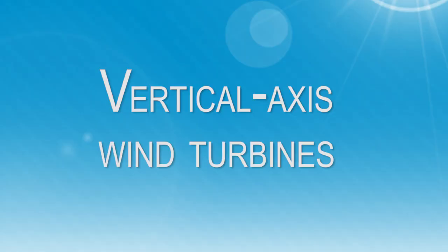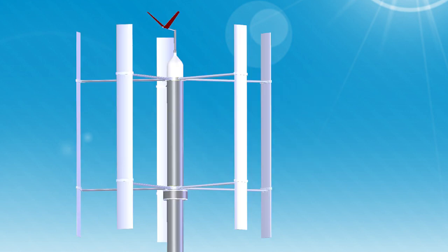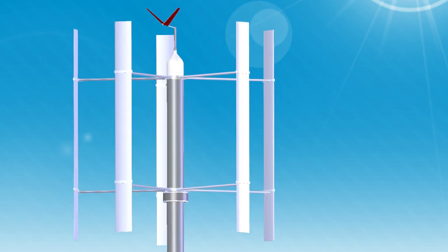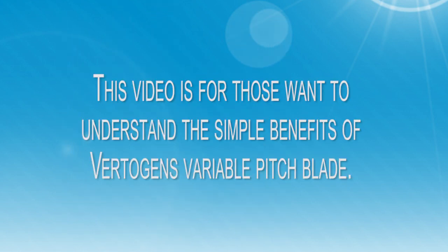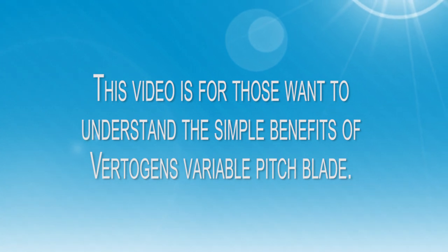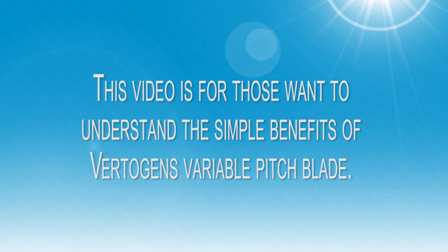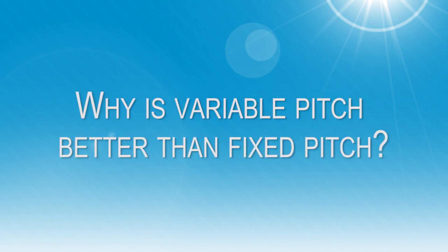Vertical axis wind turbines, also known as cyclo turbines. This video is for those wanting to understand the simple benefits of Vertigen's variable pitch blade system versus a fixed pitch blade system.